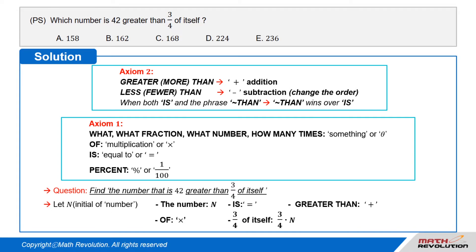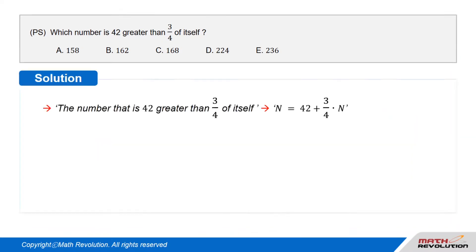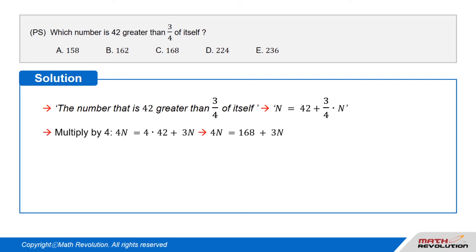So the number that is 42 greater than 3/4 of itself can be written as N = 42 + (3/4)N. Multiply by 4: